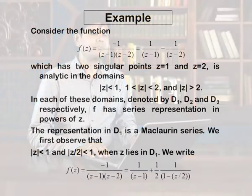The Laurent series differs from the Taylor series only by this principal part of negative powers of z. For example, consider the function minus 1 over (z minus 1)(z minus 2). We can split it by partial fractions as 1 over (z minus 1) minus 1 over (z minus 2). It has 2 singular points. Considering the entire complex plane, it has only 2 singular points: z = 1 and z = 2. The function is analytic in each of these domains: inside |z| = 1, between 1 and 2, and when |z| > 2. Assuming these domains are denoted by d1, d2, and d3 respectively, f has a series representation in each.